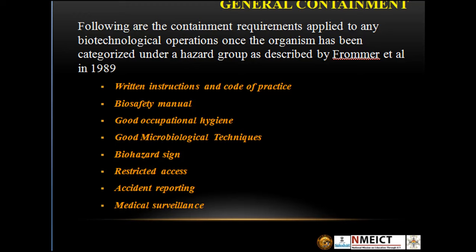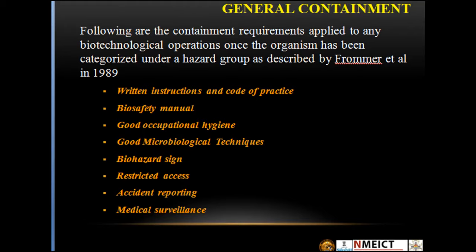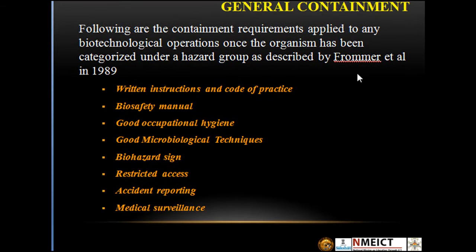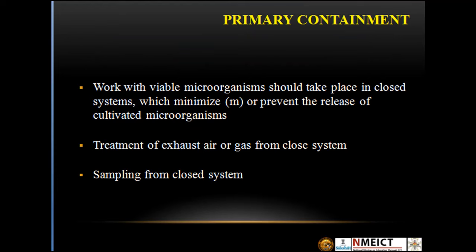There are many containment requirements applied to any biotechnological operation once the organism has been categorized under a hazard group, as described by Fromer et al. in 1989. These general containment requirements include: written instructions and code of practice, biosafety manual, good occupational hygiene, good microbiological techniques, biohazard signage, restricted access, accident reporting, and medical surveillance.